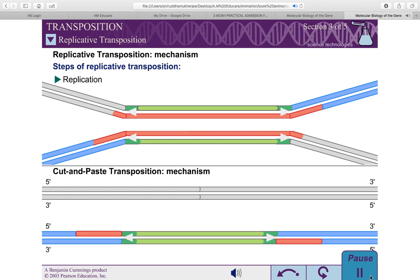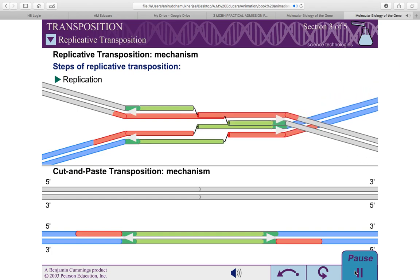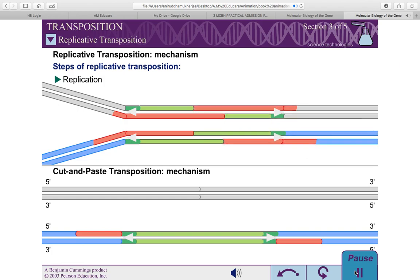Once again, the staggered attack of the target DNA results in target site duplications flanking the element. In the process of moving, replicative transposition often rearranges the flanking chromosomal sequences. For some transpososomes, site-specific recombination occurs between the two transposons, resolving these rearrangements.